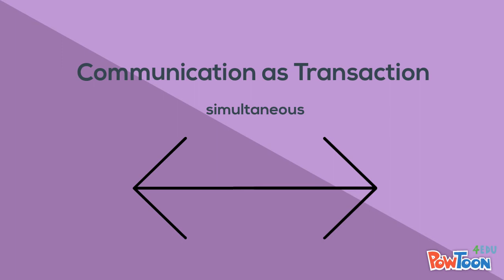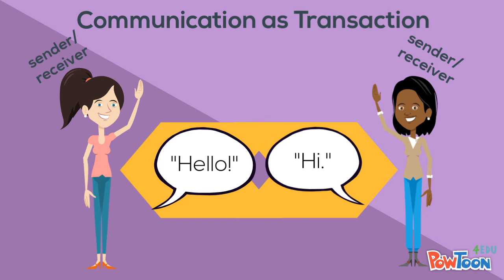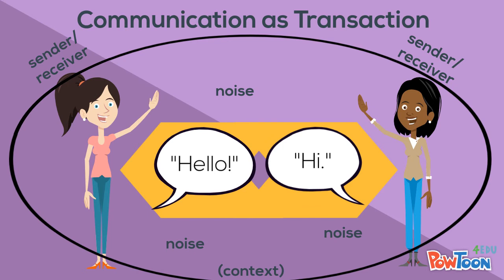The last model is communication as transaction. This is simultaneous communication, or message creation. Here, both communicators are sending messages at the same time — that is the main difference between this model and the other two. As always, there is noise. This model also adds the component of context, which is the physical, historical, or psychological environment.